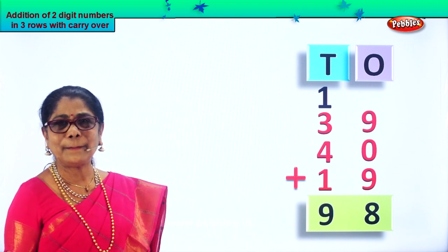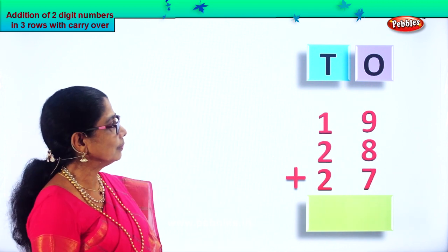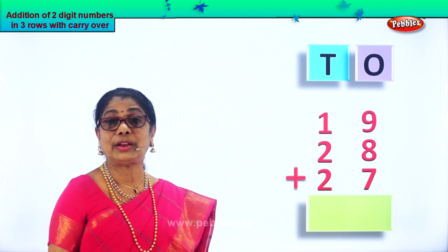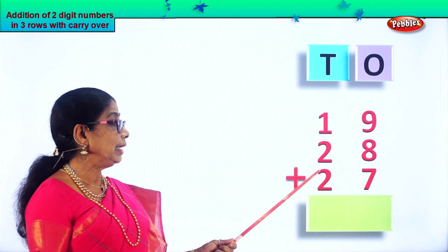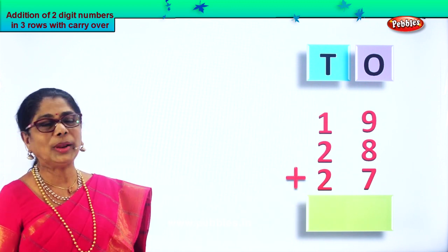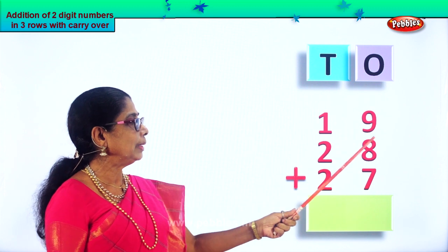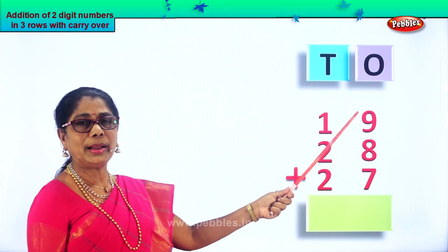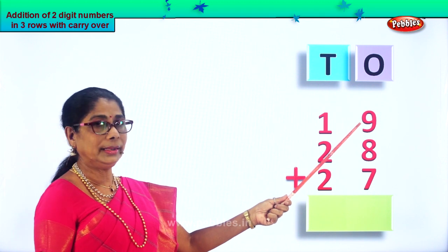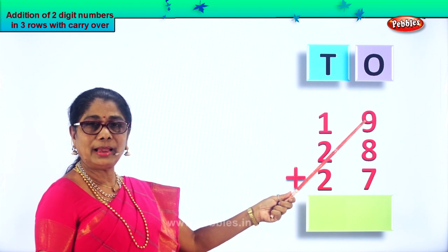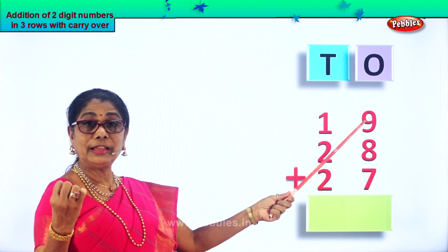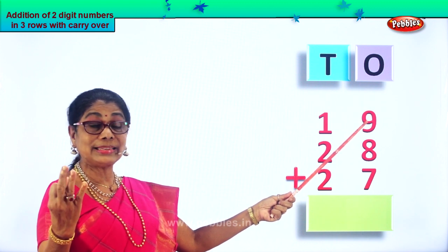Let's look at another sum: nineteen plus twenty-eight plus twenty-seven. Let's add and see — add the ones. Nine plus eight plus seven: nine in the mind, eight in your fingers. After nine: ten, eleven, twelve, thirteen, fourteen, fifteen, sixteen, seventeen.